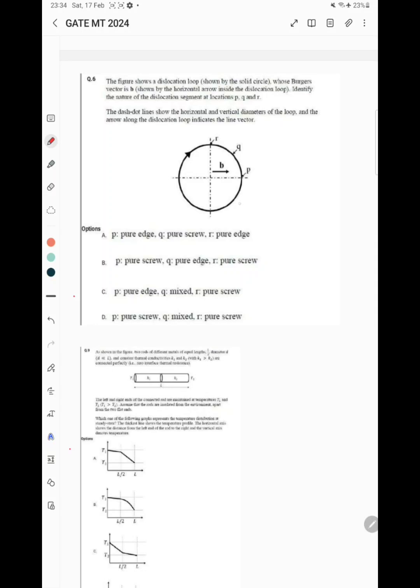We have to identify the nature of dislocation at P, at Q, and at R. If this is the line vector moving like this and this is the direction of Burgers vector, P will be pure edge, R will be pure screw, and Q is the mixed dislocation.